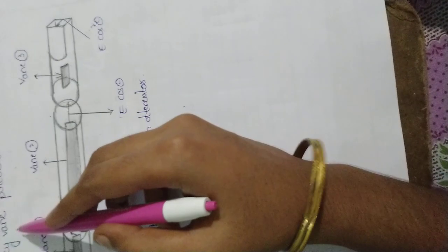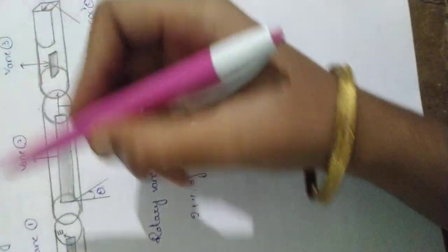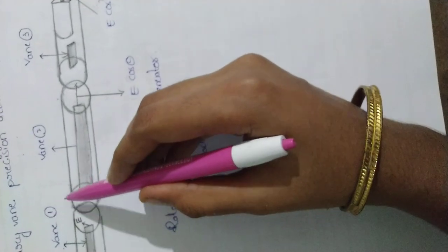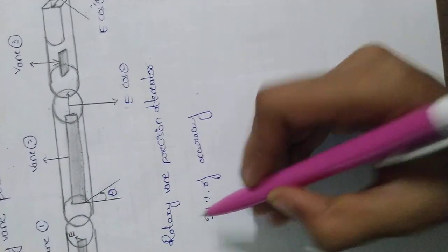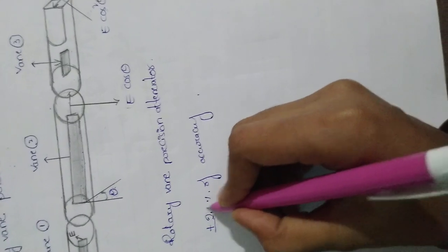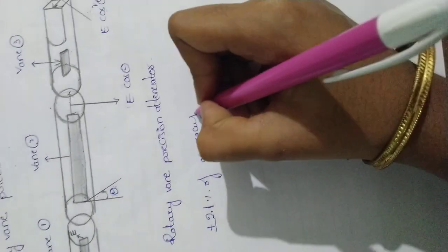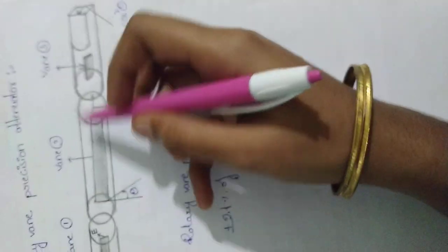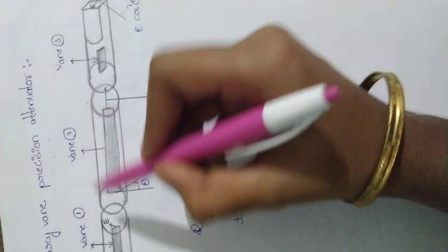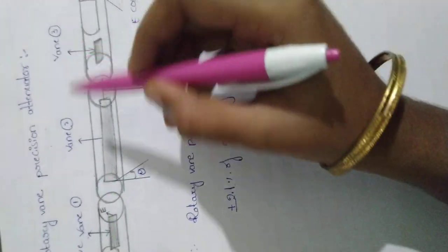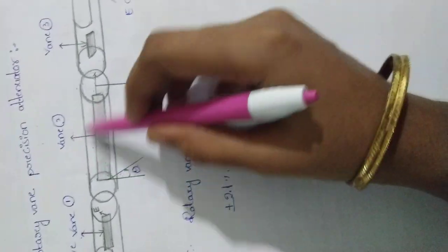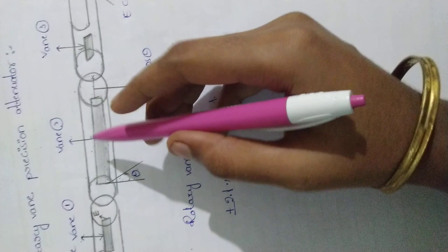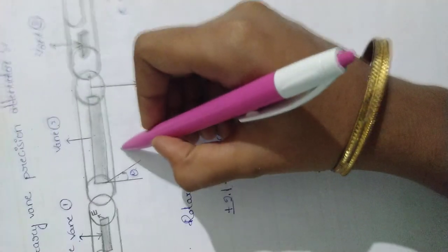Rotary Vane Precision Attenuator - in this Rotary Vane Precision Attenuator, which can provide 2.0% accuracy, consists of 3 waveguides: 2 rectangular waveguides and a circular waveguide. At the center of the attenuator, it consists of 3 resistive vanes.